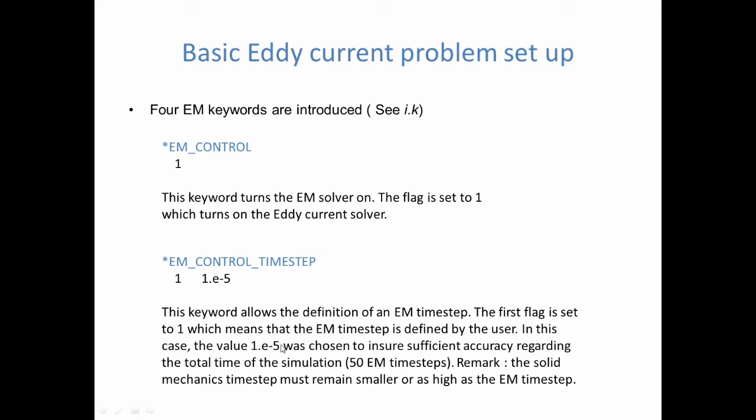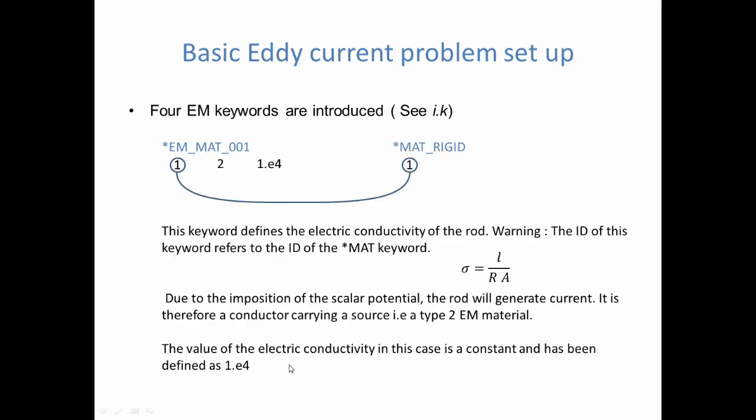Next we will introduce the material keyword. Basically in order for the EM solver to run, it needs to know what is the electromagnetic conductivity of your conductor. In our case, here that's the rod. And the user here has defined a conductivity of 1 to the power minus 4.